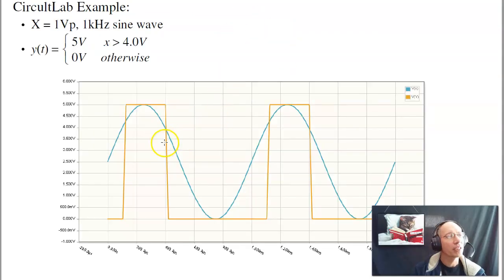If I simulate that circuit in CircuitLab and have x be the blue line, y is the orange line, notice that the output is binary. It's either zero volts or five volts. And it switches right here at four volts. When the input passes through four volts, ideally, the output slams low or slams high. That's a comparator.